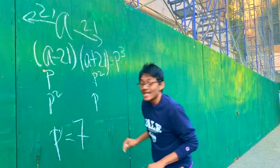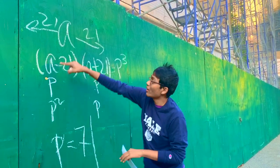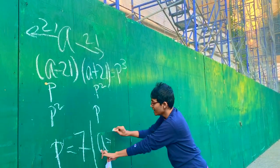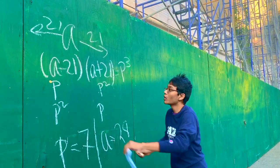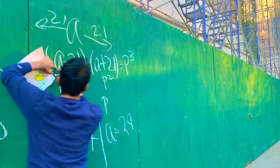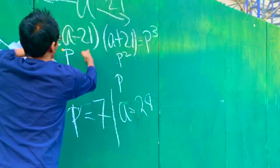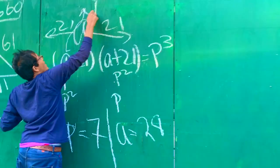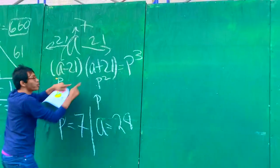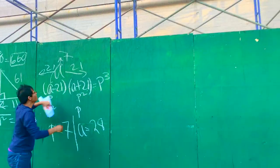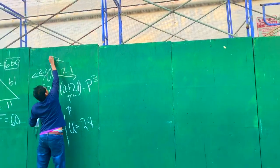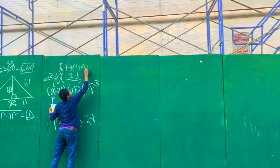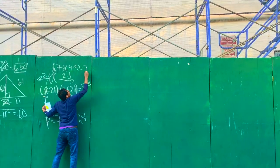At the end of the day, it turns out if you plug the numbers in just right — if you plug in a = 28 — you'll get that p³ turns out to be 7³. So p is 7, a is 28, and indeed we have found our final answer to be 28 years old.